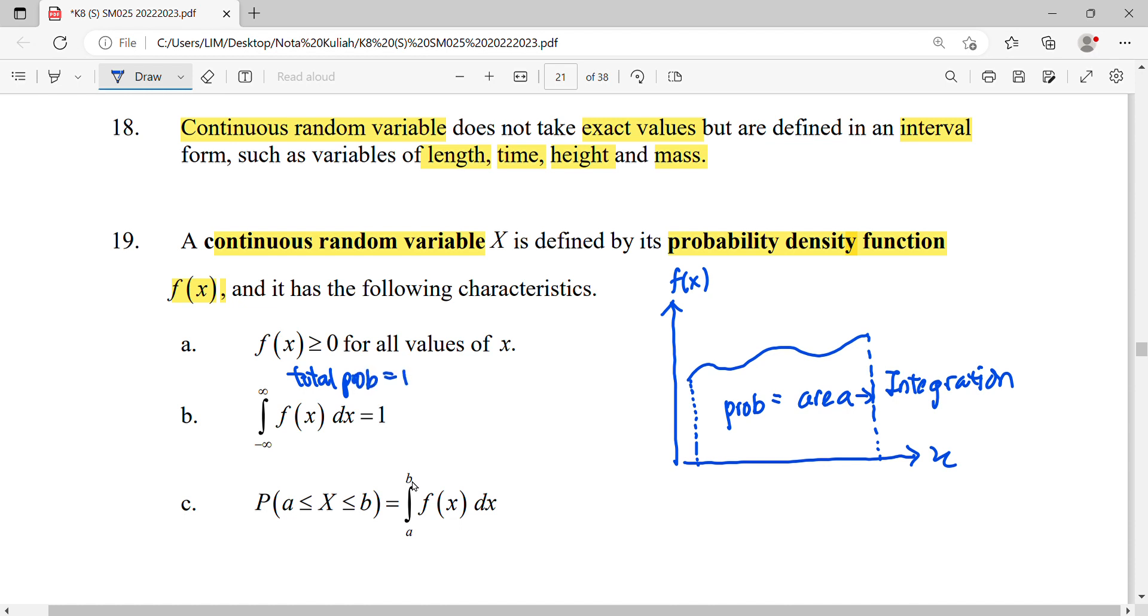In other words, the total area must equal one. Therefore, integrating from the lower limit negative infinity to the upper maximum limit must totally equal one. This is the characteristic for continuous random variables.